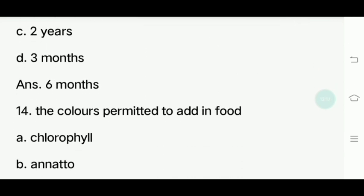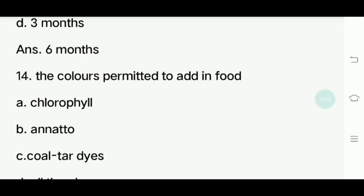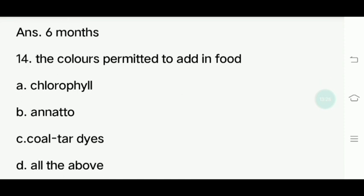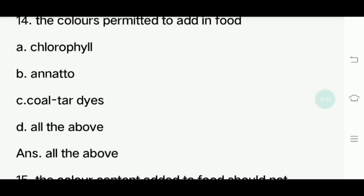Fourteenth question: The color permitted to add in food. Which colors are permitted? Options: Chlorophyll, Annatto, Coal tar dyes, all the above. Answer is all the above.